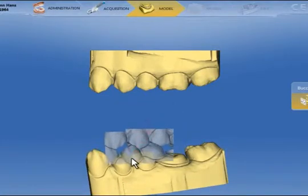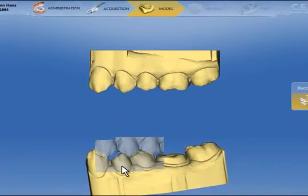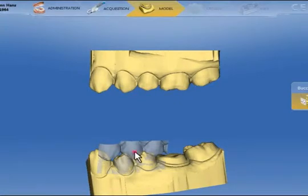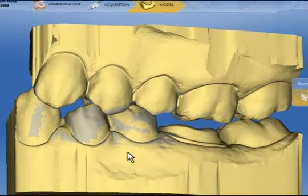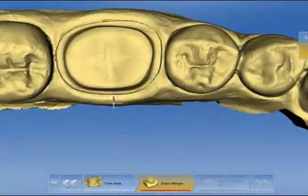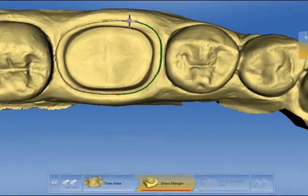The model is displayed together with the buccal impression. We drag it onto the lower jaw model and then we drag both parts onto the upper jaw model. Once they stitch together, click on the double arrows and draw the preparation margin.